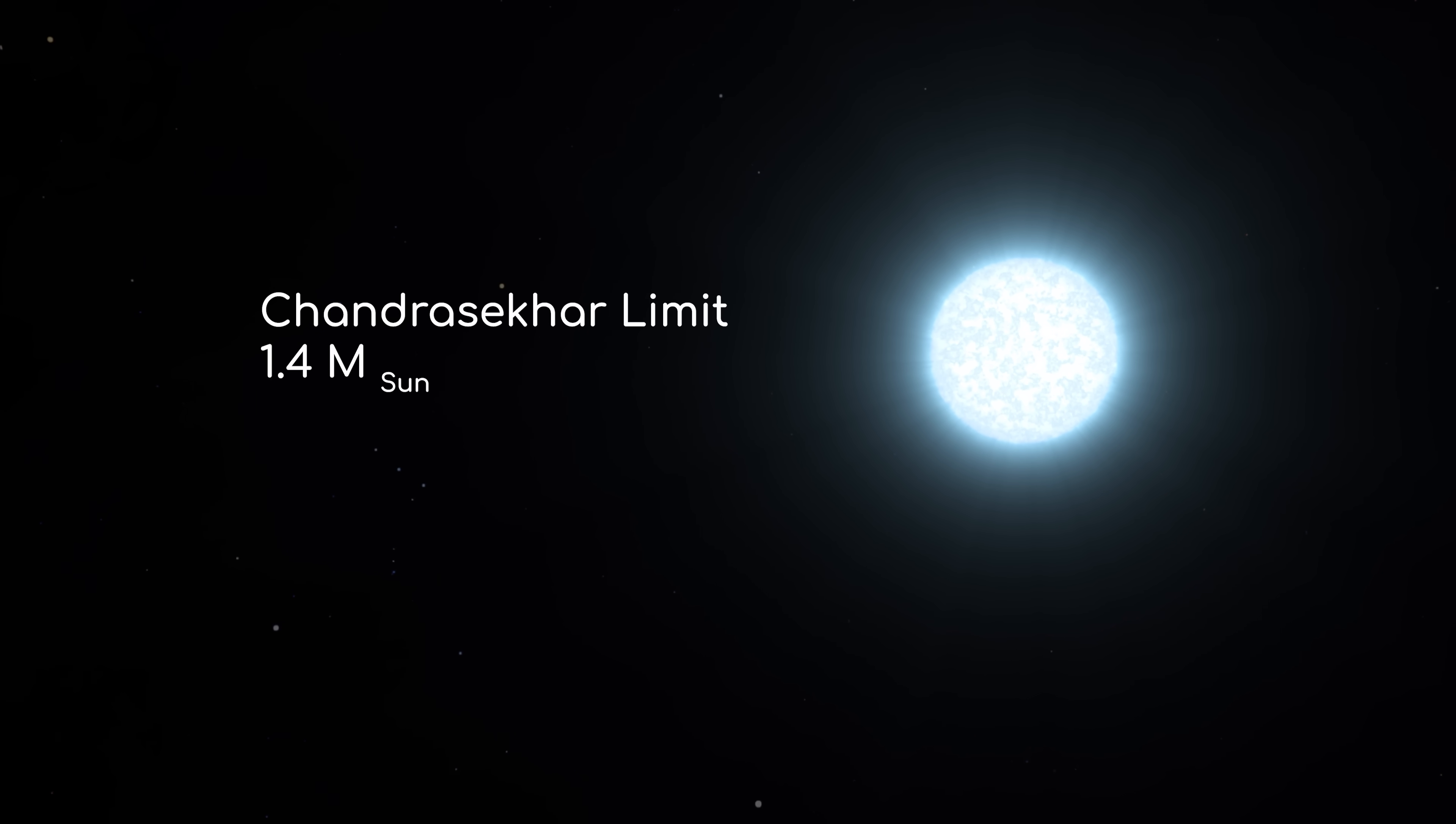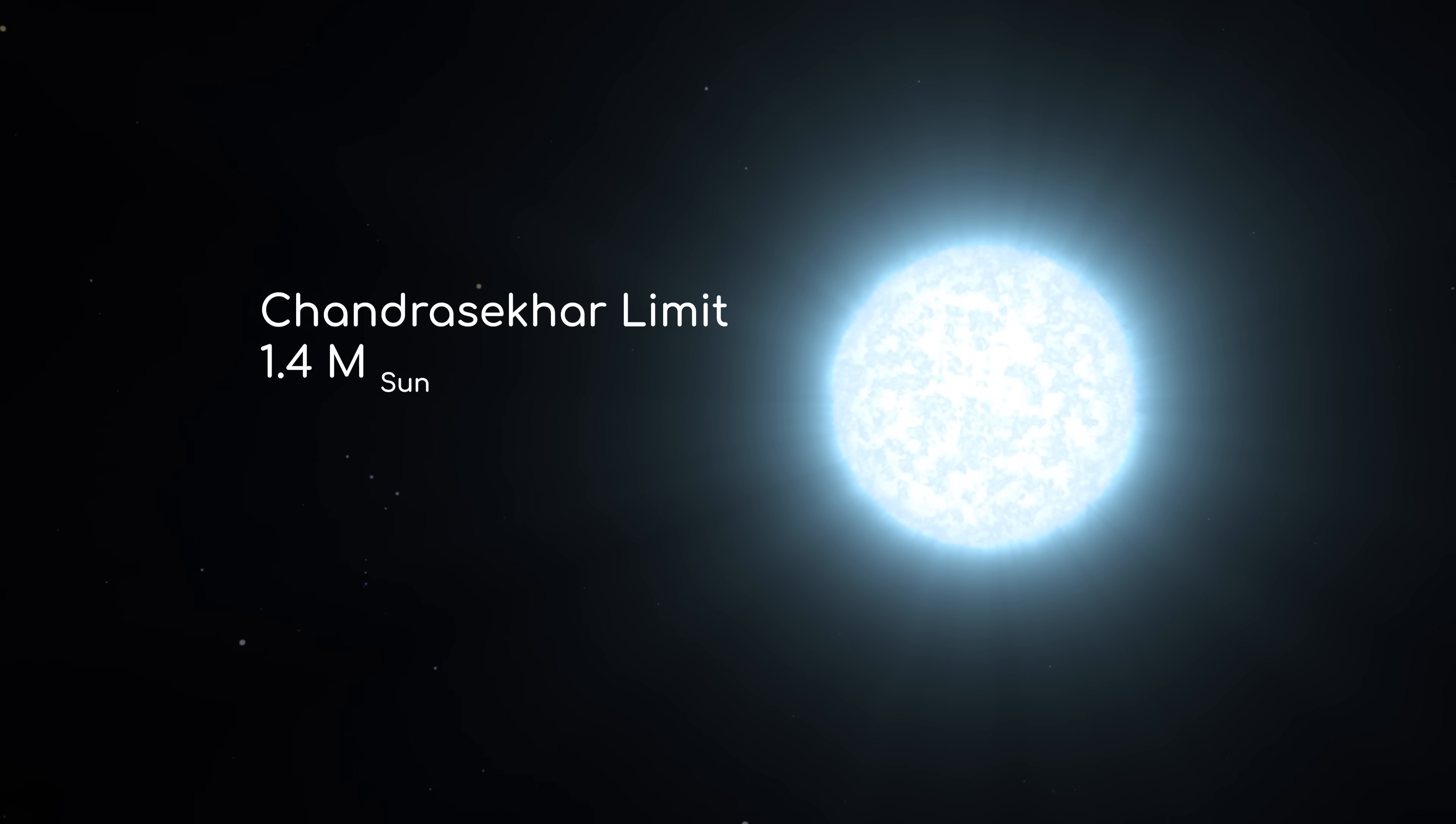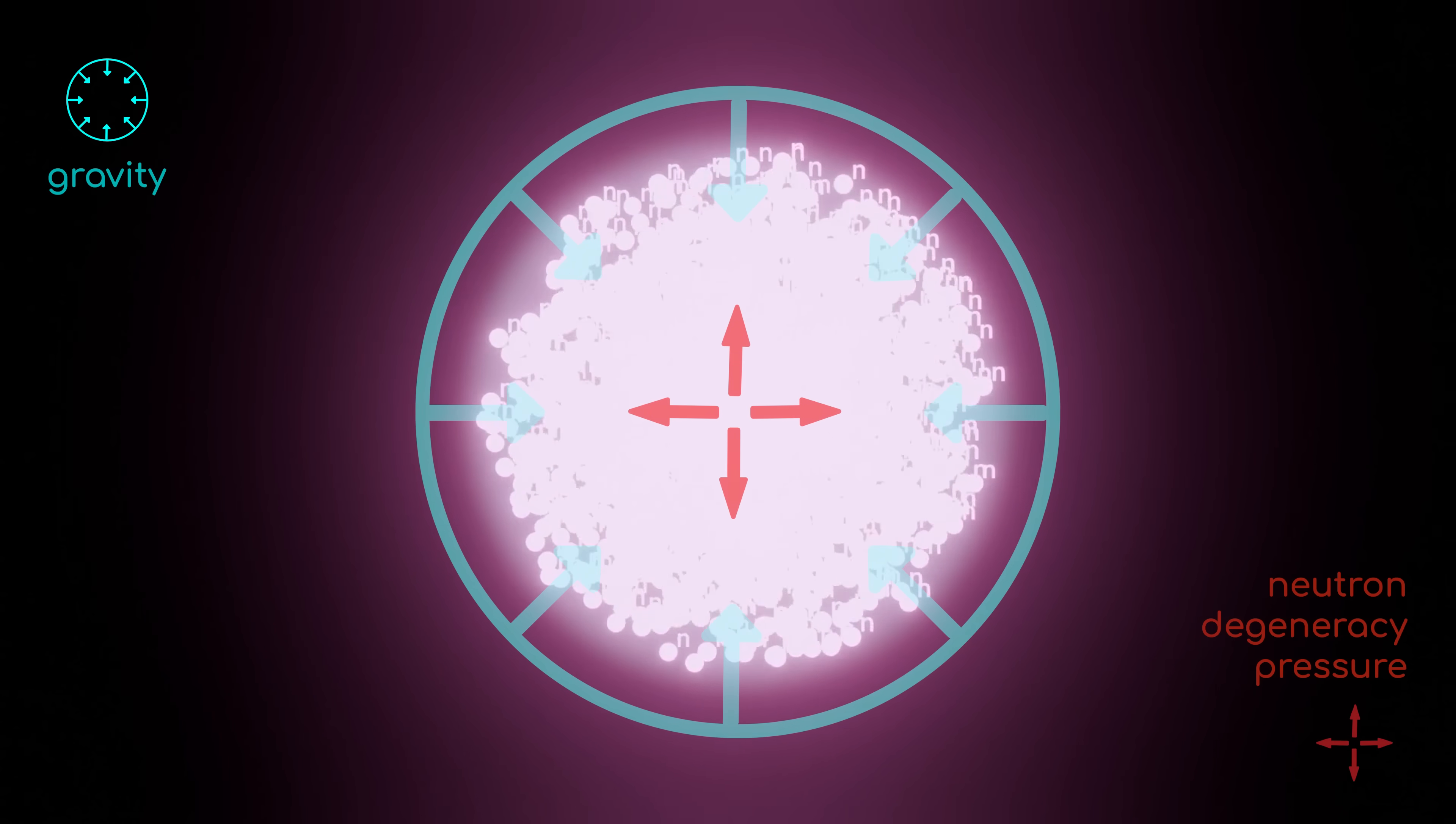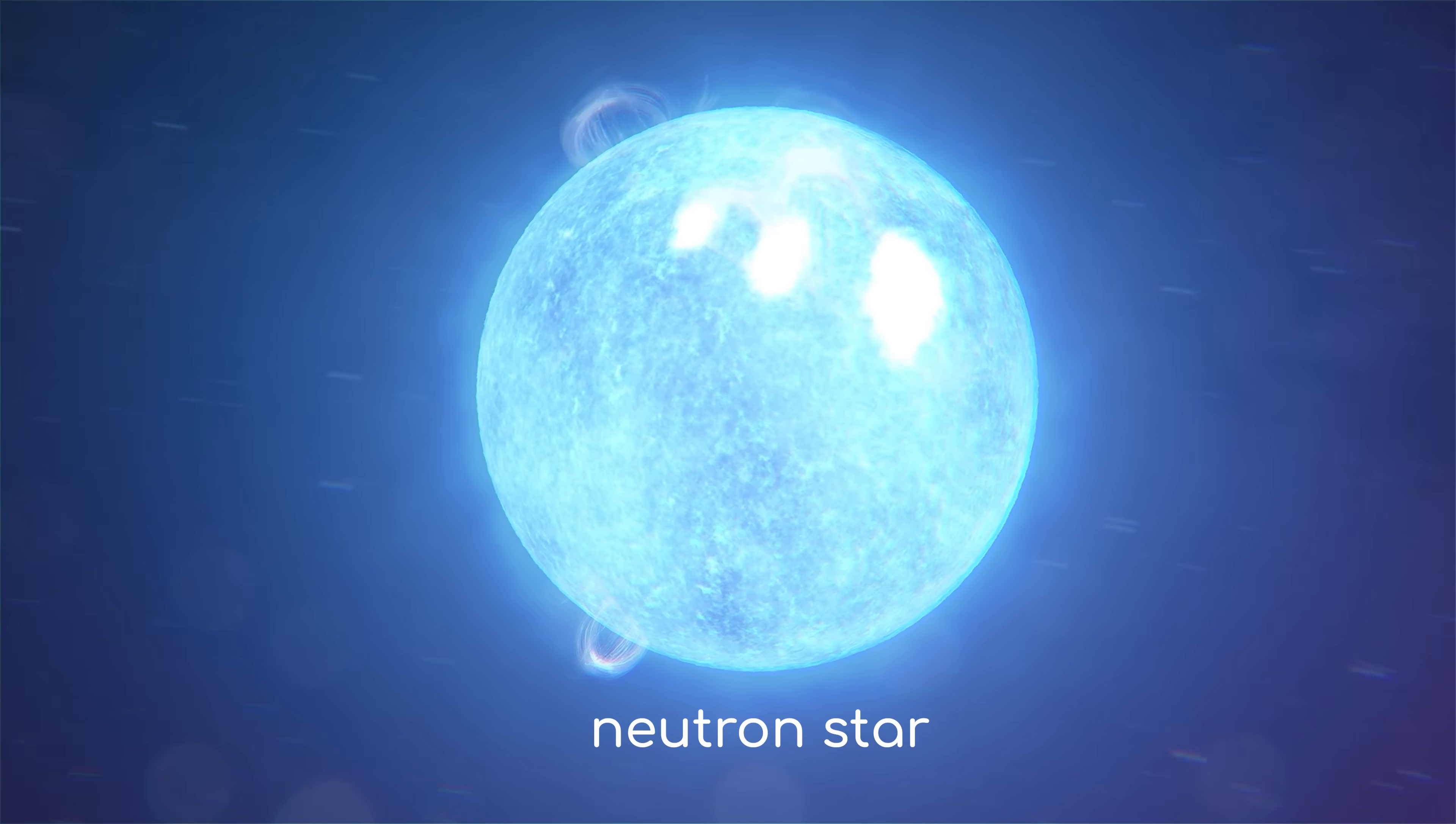But some stellar remnants are so massive that even electron degeneracy pressure isn't strong enough to counteract the pull of gravity. This is called the Chandrasekhar limit. It's absolutely impossible to have a stable white dwarf any heavier than 1.4 times the mass of the Sun. If a star has burned through all its nuclear fuel, and its core is still heavier than the Chandrasekhar limit, that core will collapse in on itself until it becomes so dense that an even stronger type of quantum pressure emerges, known as neutron degeneracy pressure, which prevents neutrons from getting too close to each other. A star that reaches this state is called a neutron star, the smallest and densest known class of stellar objects.